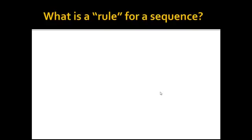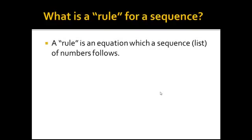What is a rule for a sequence? A rule is an equation which a sequence or list of numbers follows. It's really that simple. And a lot of folks freak out when they see the word rule because we tend to not like rules. But really, it's just an equation that tells us what comes next.